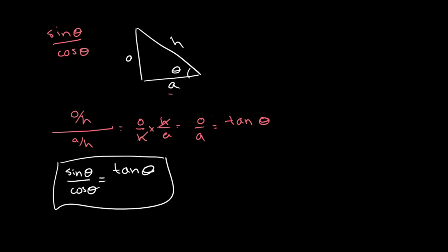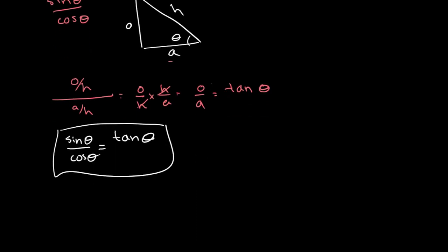We come across our second identity when we square sine and cosine. So when we have sine squared of theta plus cosine squared of theta, this is when we get our second identity. I just want to clarify that sine squared of theta is the same thing as sine of theta, whole squared, plus cosine of theta whole squared.